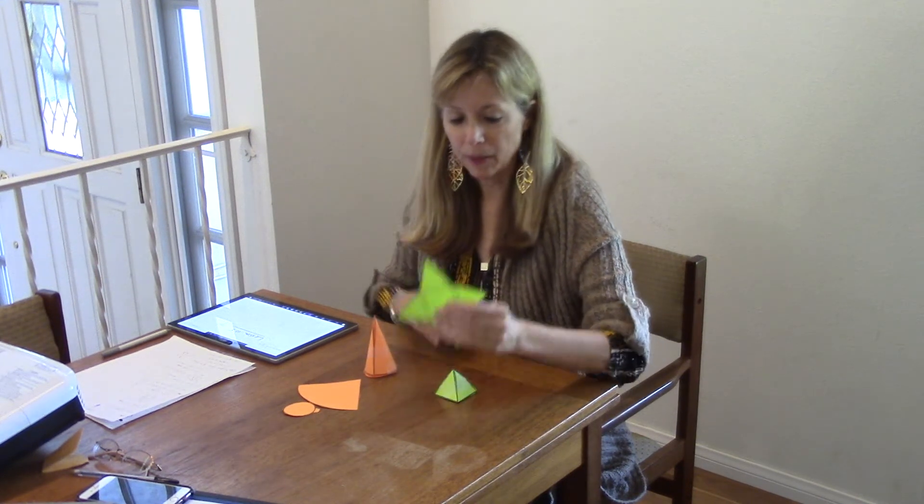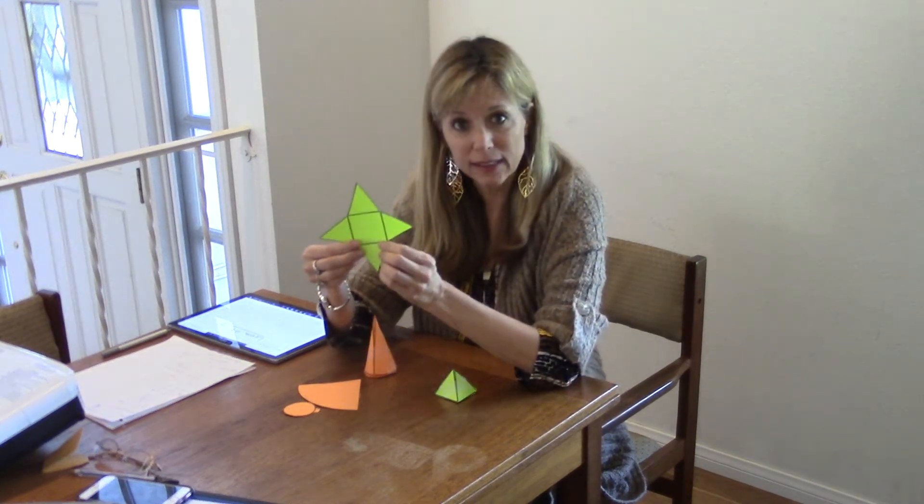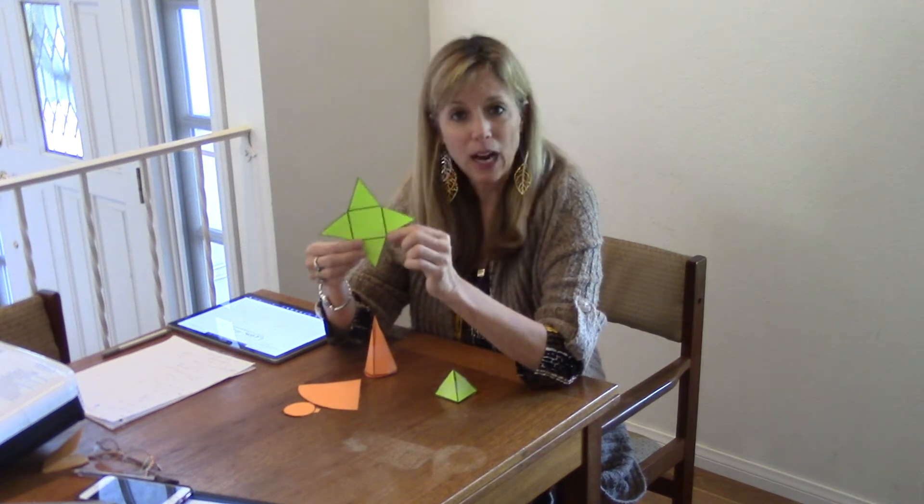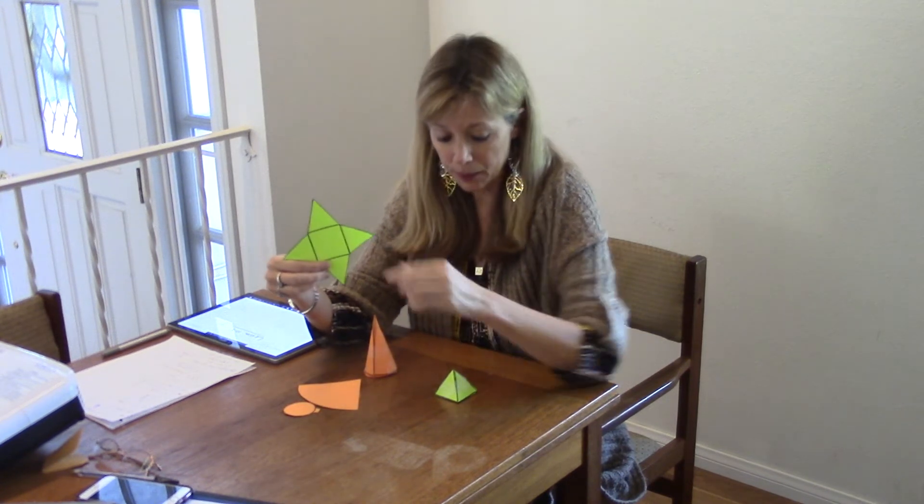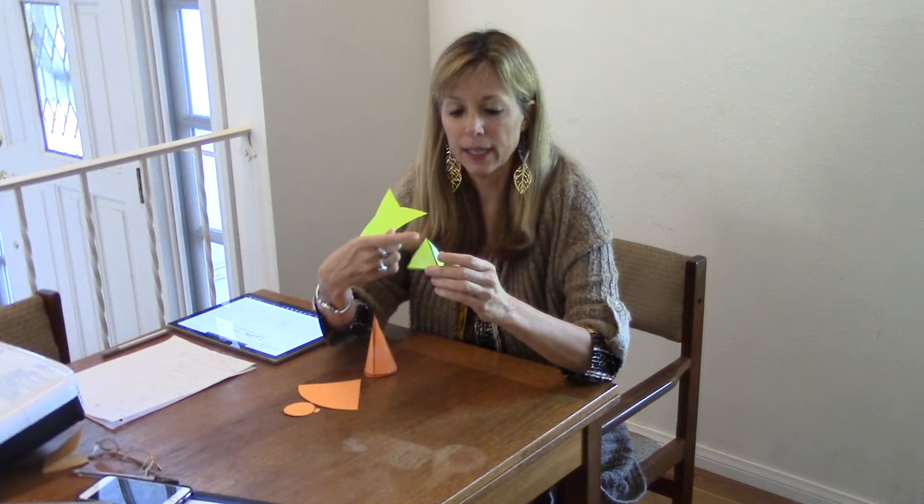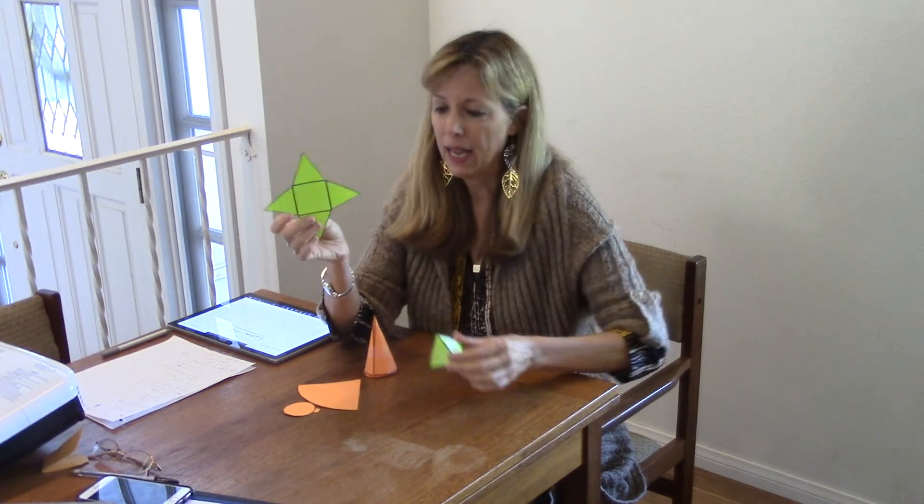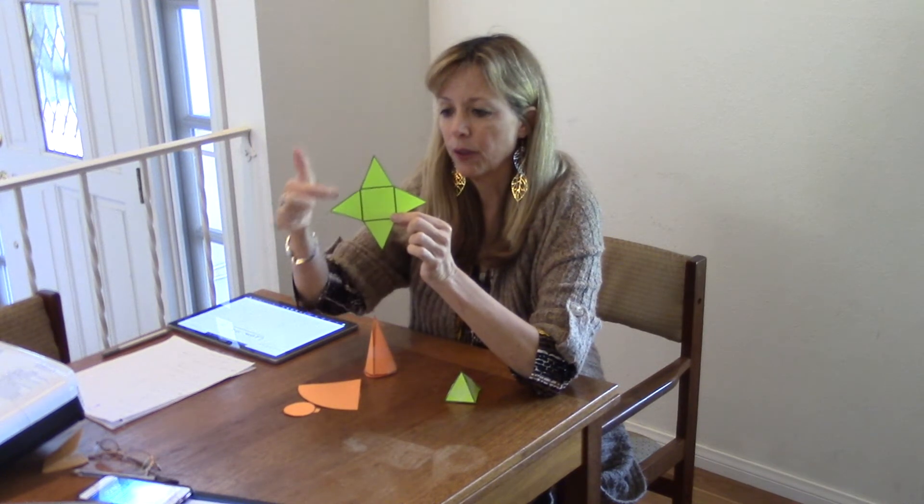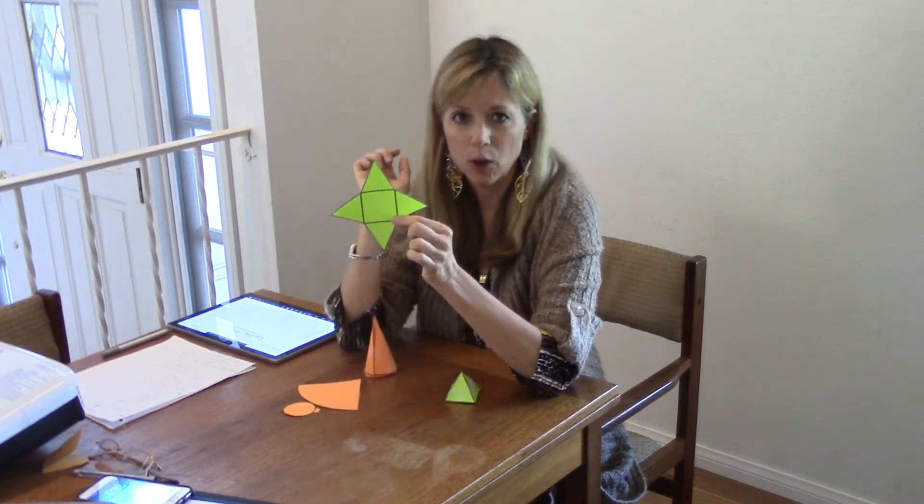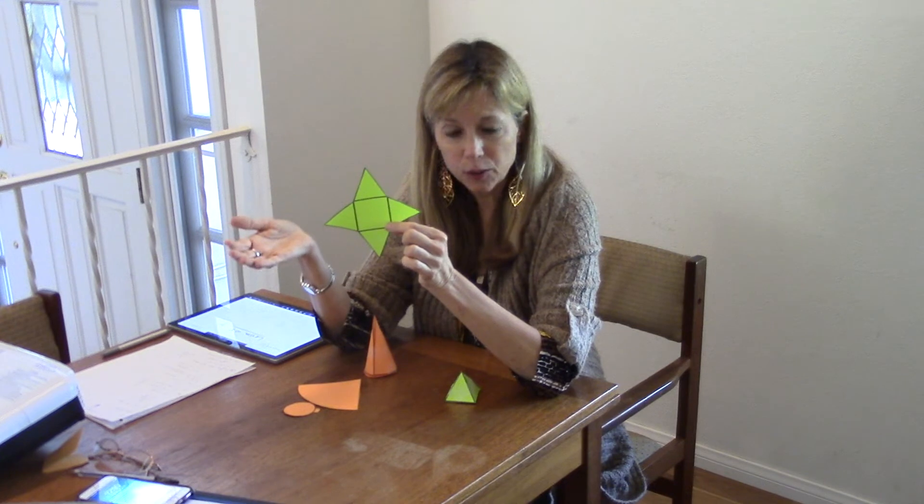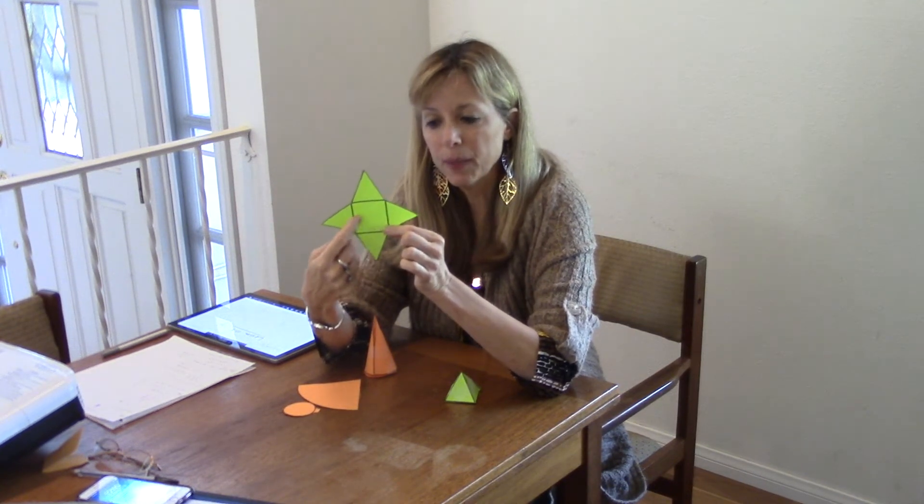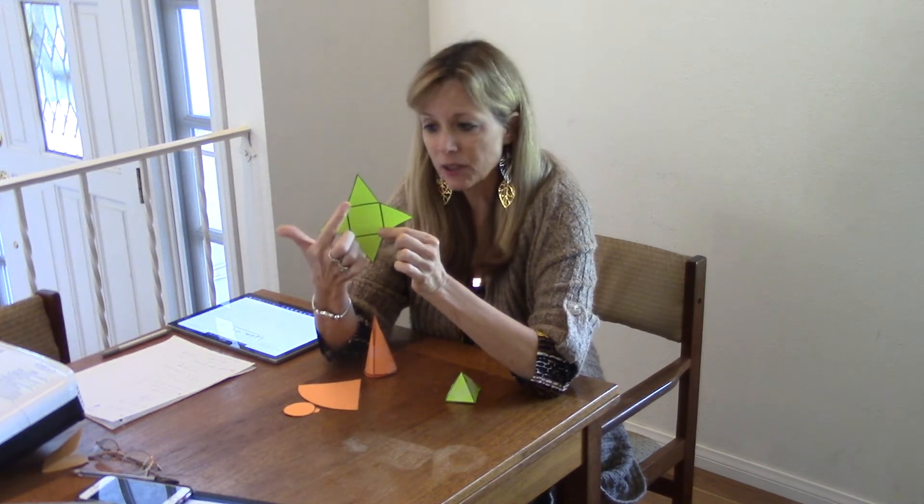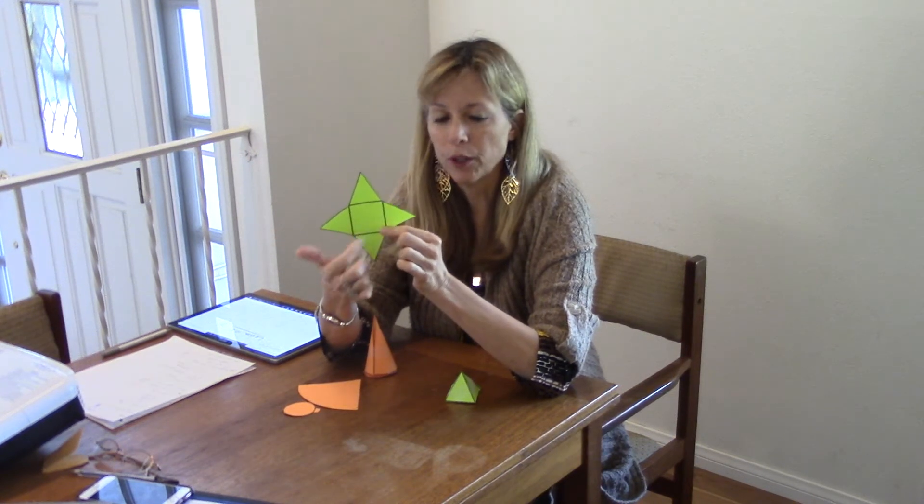The first shape I want to talk about is the pyramid. We looked at this last time but now we're going to find the surface area of a pyramid. So when it's all folded up it looks like this. Here's the square base and then we have four triangles that are the same. And when we look at the net you can see the square base and the four triangles that are all the same. So to find the surface area I need to find the area of the base and I need to add it to all four triangles.